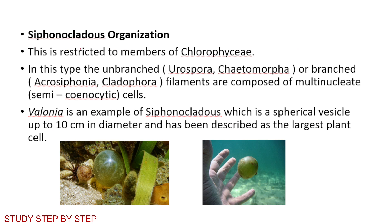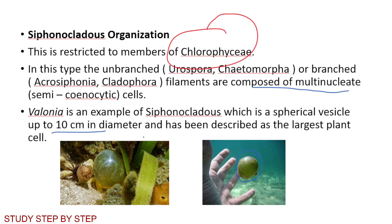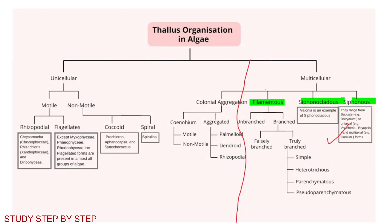Siphonocladus organization is restricted to members of Chlorophyceae. Filaments are composed of multinucleate coenocytic cells. Example: Valonia — a spherical vesicle about 10 centimeters in diameter, described as the largest plant cell.